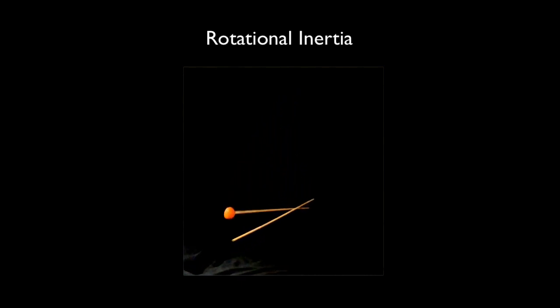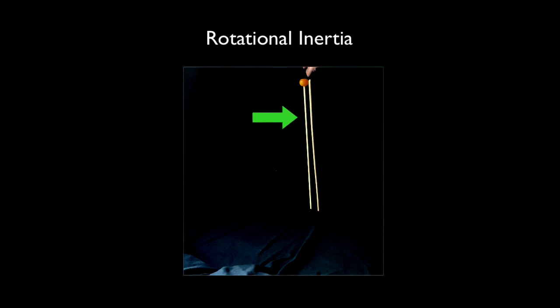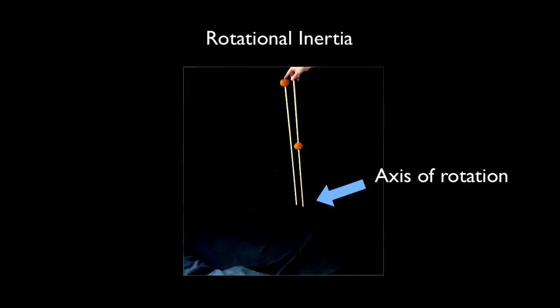However, we find that the distance the mass is located from the axis of rotation is also important. Let's put oranges of equal mass on both sticks, but with one orange toward the middle of the stick. Which will fall slower?